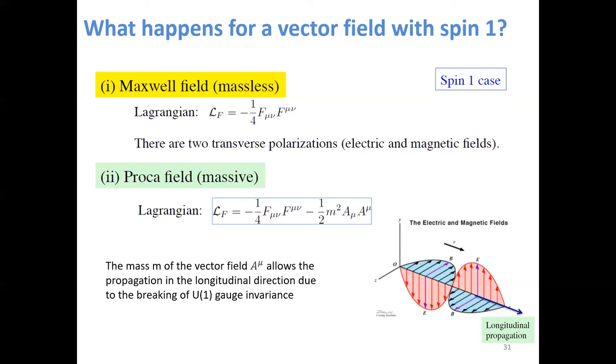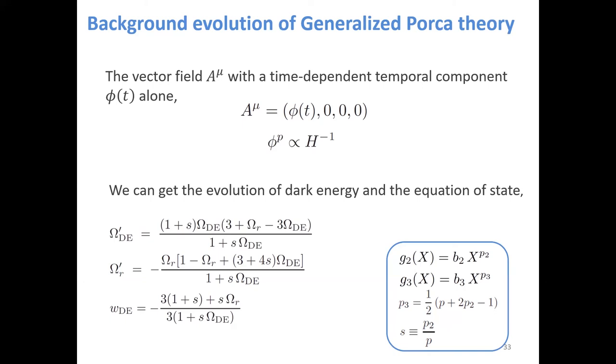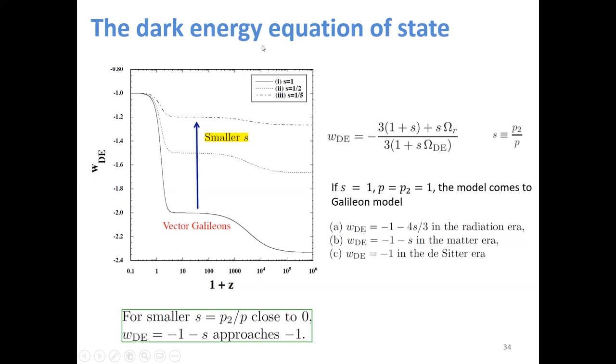So the generalized Proca theory is a good way to make a U1 breaking vector field as a dark energy candidate. The most simplest Proca action is given by this. Part of G2 and G3 is given by this one, and the P2 and P3 are free parameters. Now we introduce the background evolution of generalized Proca theory. The vector field A mu with a time dependent temporal component phi(t) is given by this, and this phi has relationship with Hubble parameter. We can also get the evolution of dark energy and the equation of state as this.